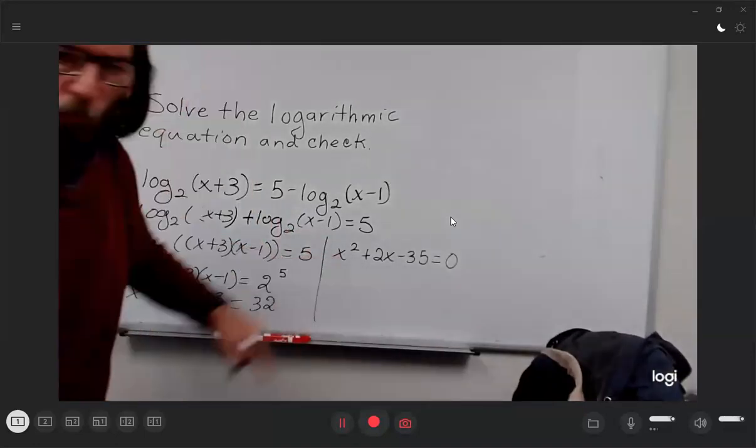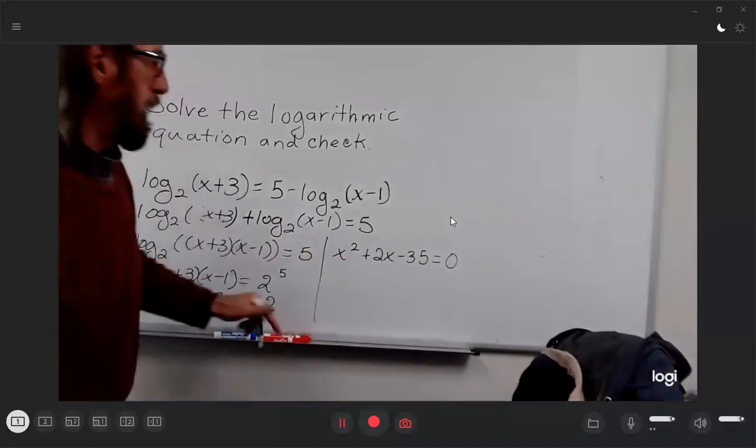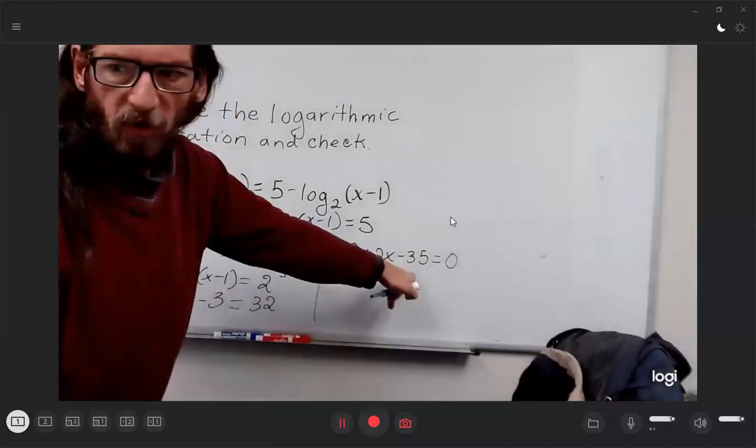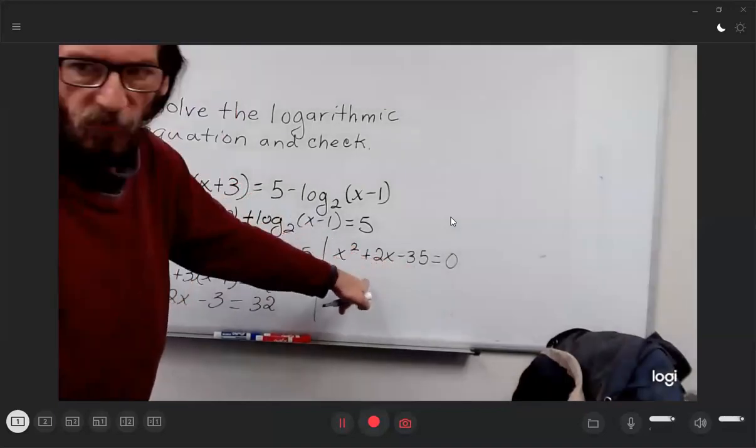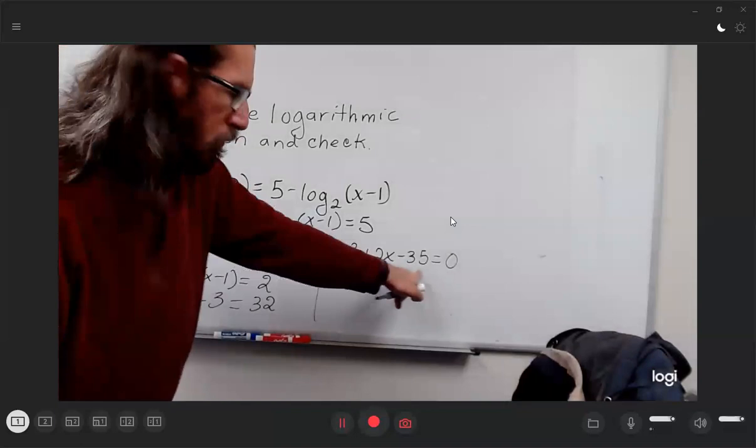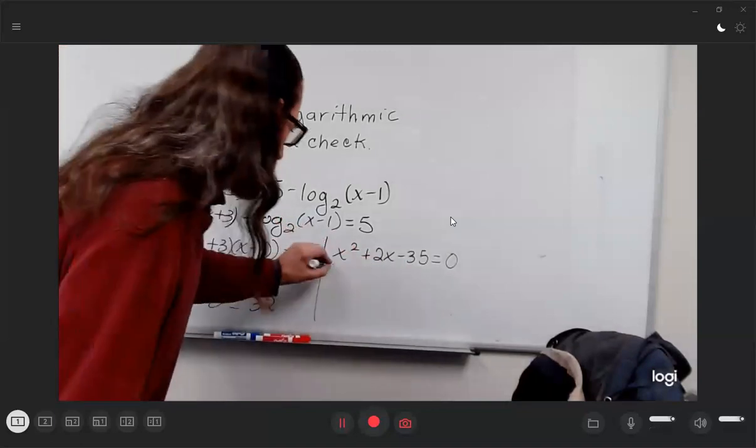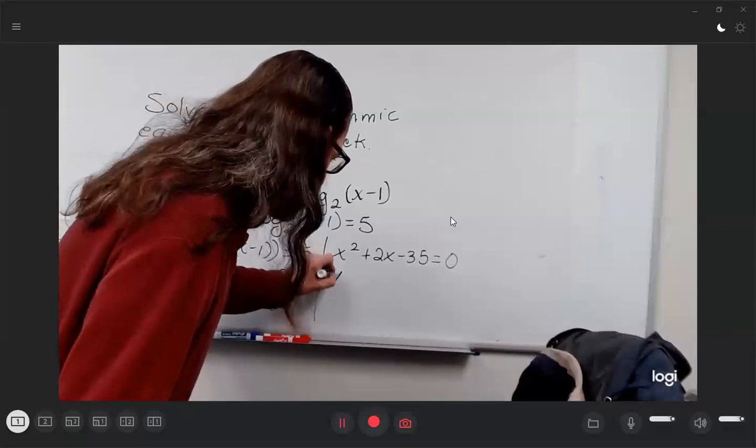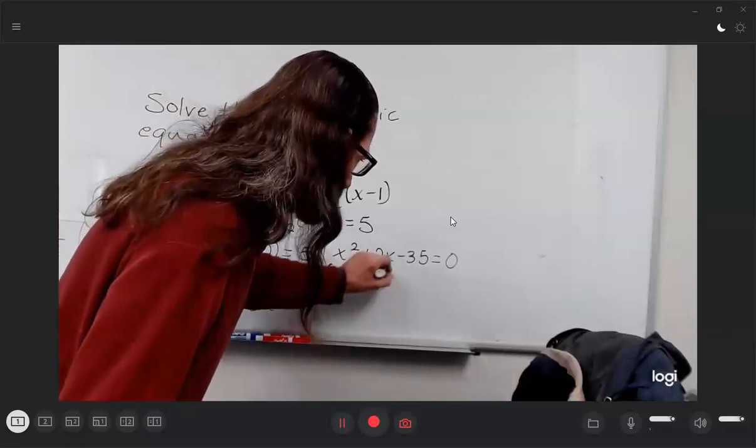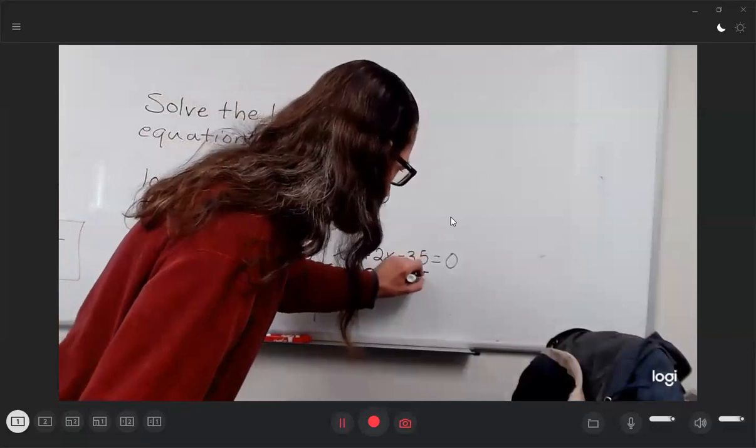Factor. So x² and two numbers with a product of -35 and a sum of positive 2 would be a positive 7 and a negative 5. So the factors are (x+7) and (x-5).